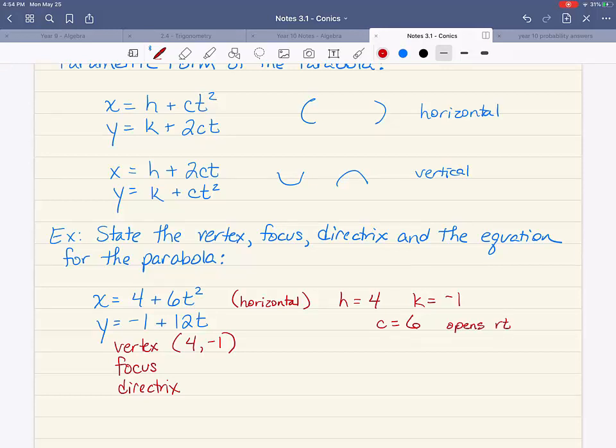So if that's the case, in order to find the focus, this is my workings over here, I am going to add six. I'm going to go six units to the right of my vertex. And if I'm moving to the right, which variable is changing?